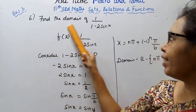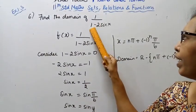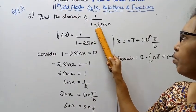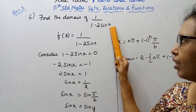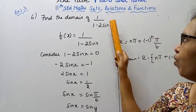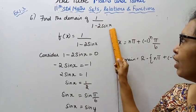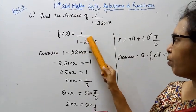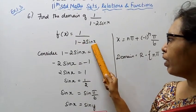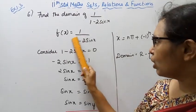Find the domain of 1 by 1 minus 2 sin x. f(x) = 1 / (1 - 2 sin x). This is the denominator.